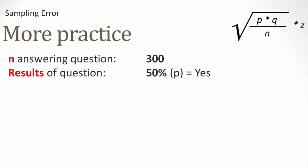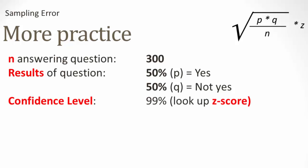Here's some more practice for you. For this first one, assume that we have 300 answering the question, and 50% said yes, that would be P. So, of course, you can calculate that Q would be 50%. You're using the confidence level of 99%, so you look up the Z-score, and you've got 2.58. You can stop and calculate it yourself, and then you'll find that it's plus or minus 7.4%.